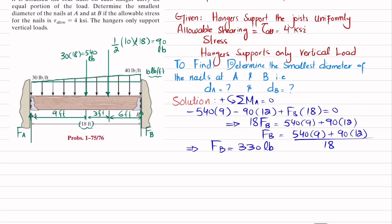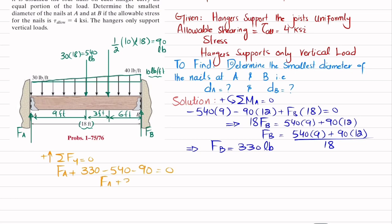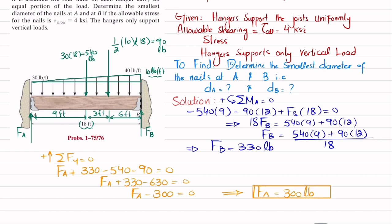Now using the sum of all forces in the y-direction equals zero, with upward forces positive: FA + FB − 540 − 90 = 0. Substituting FB = 330: FA + 330 − 540 − 90 = 0, so FA + 330 − 630 = 0, giving FA − 300 = 0. Therefore FA = 300 pounds.